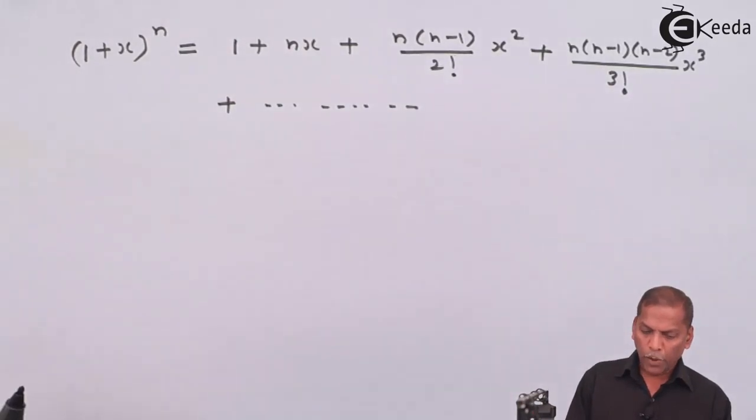So in this formula, we put n equal to minus 4.